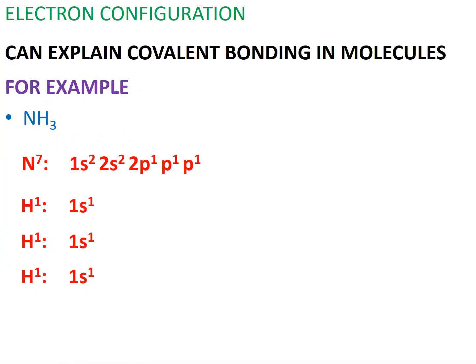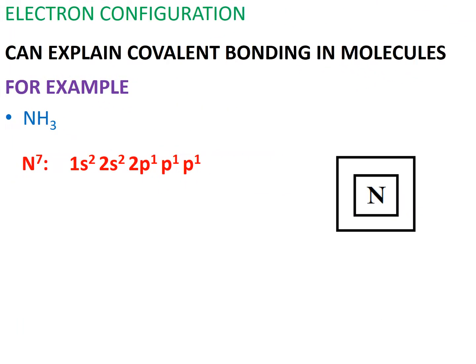We can also show the bonding of these orbitals using dot-cross diagrams. Let's start with nitrogen. Nitrogen has two shells. The first shell is occupied by two electrons, while the second shell is occupied by two, three, four, and five electrons.